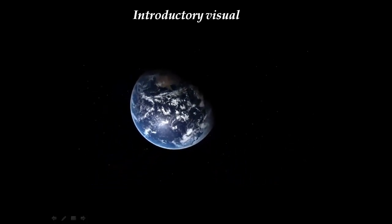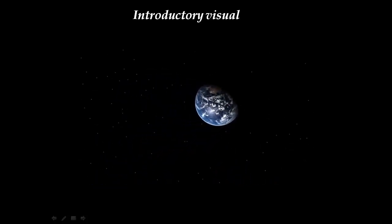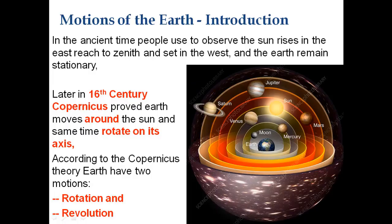Now we'll begin to understand rotation and revolution of the Earth. In ancient times, people used to observe the Sun rise in the east, reach the zenith, and set in the west, while the Earth remained stationary. This was the old idea before the 16th century — the Ptolemaic view — that the Earth was at the center and all celestial bodies revolved around it. This is called the geocentric view.